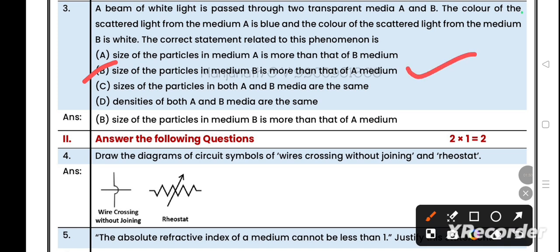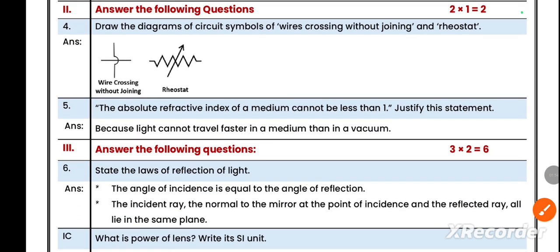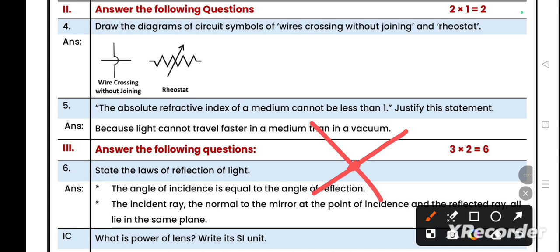Question number two: answer the following questions, each carrying one mark. Total two questions for two marks. Fourth one: draw the diagram of circuit symbols of wires crossing without joining and rheostat. If they are crossing without joining, this symbol will come. And this is the rheostat. The rheostat symbol you can write this, or you can write this also. Both are same.